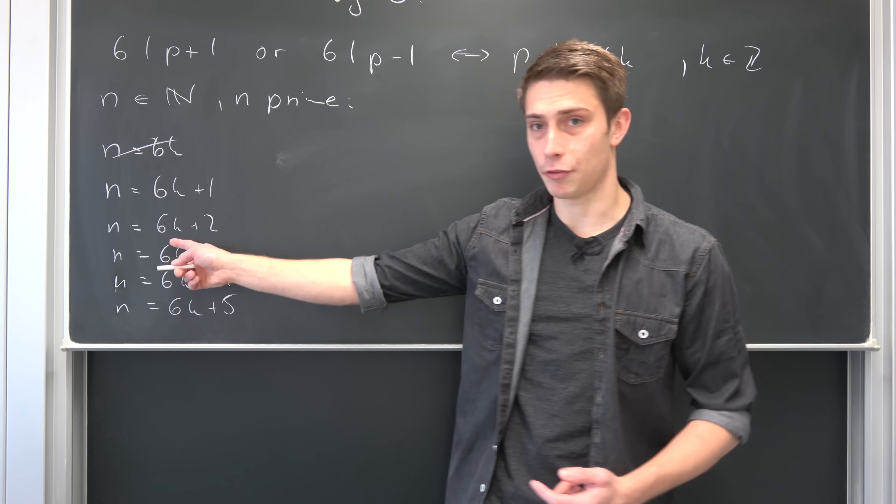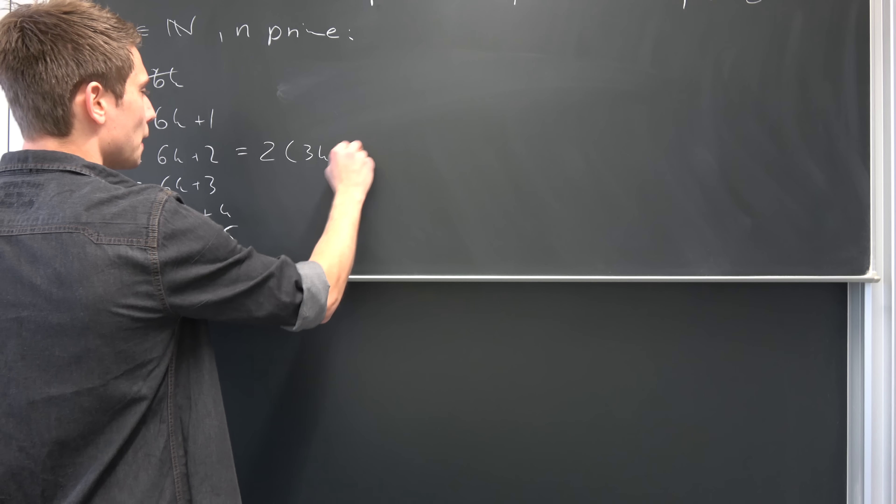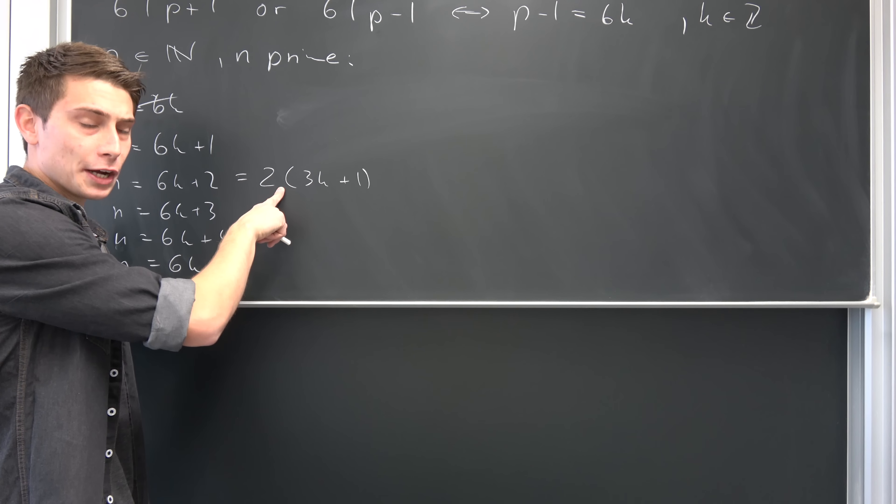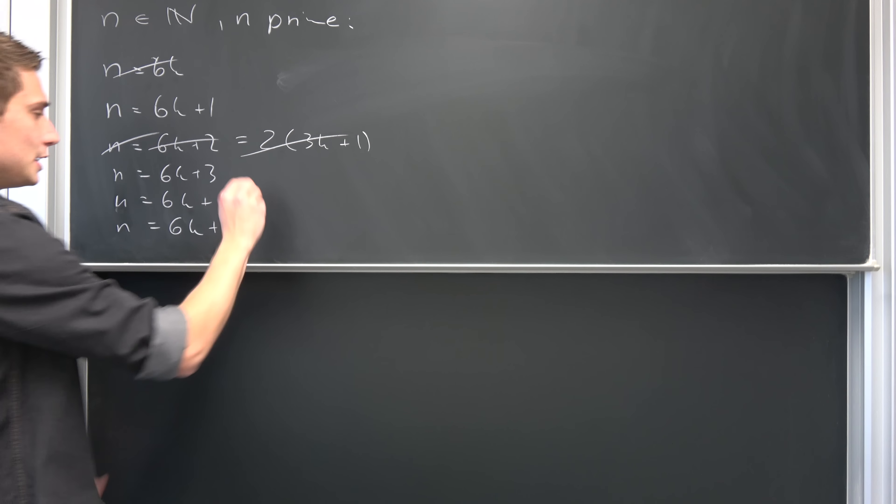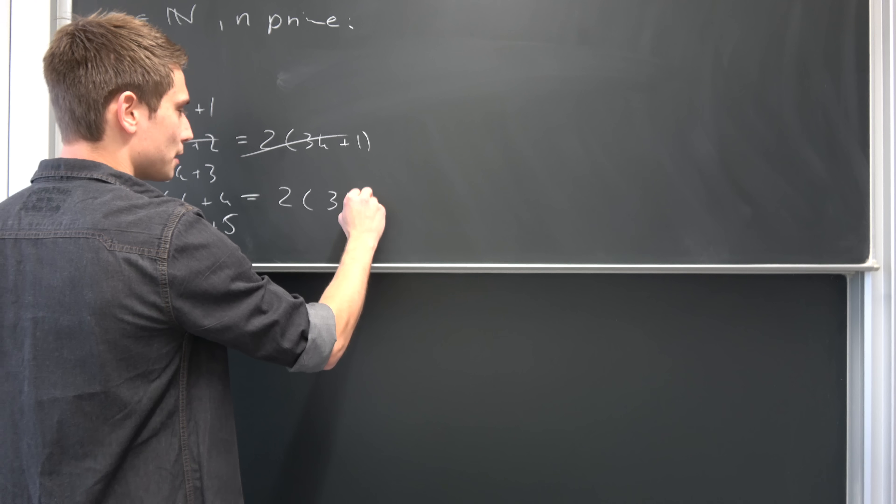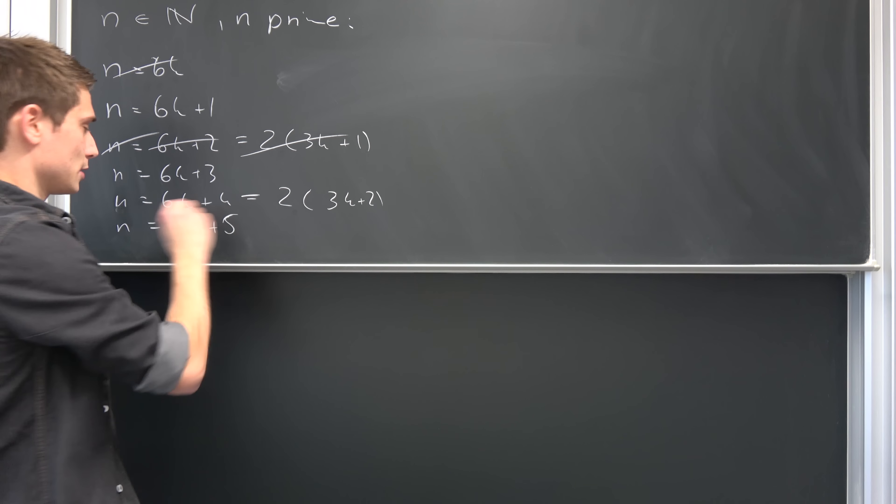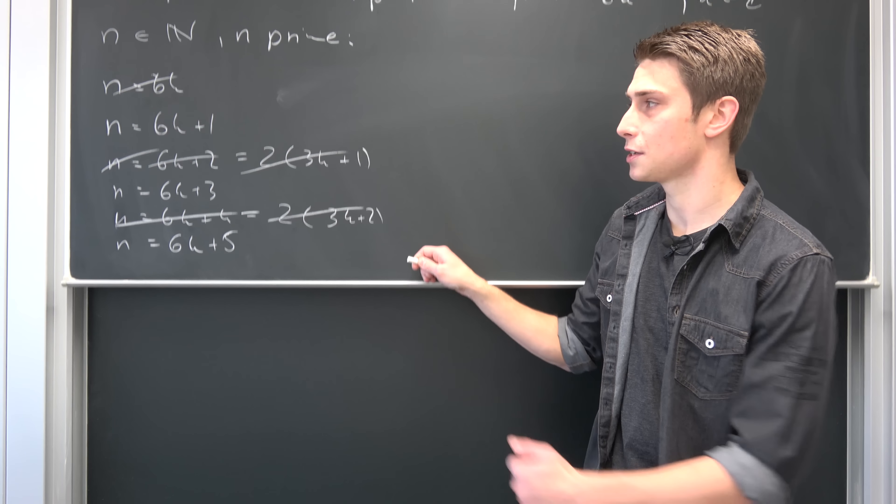Same thing here. We can factor out the 2, so we have 2 times (3k plus 1), meaning 2 divides this n, so this also doesn't correspond to a prime number. Same thing here. We can factor out the 2 once again, so this is 2 times (3k plus 2), 2 divides n, so this doesn't work out either.